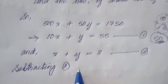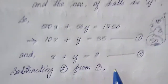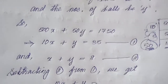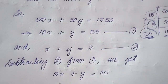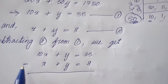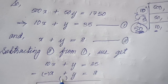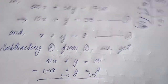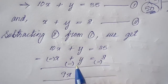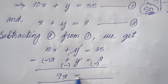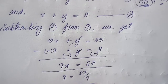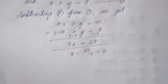Subtracting equation two from equation one: (10x + y = 35) minus (x + y = 8). Applying subtraction: minus into plus is minus. So 10x minus x is 9x, and y minus y cancels. Then 35 minus 8 is 27. So 9x = 27, which gives x = 27 ÷ 9 = 3.